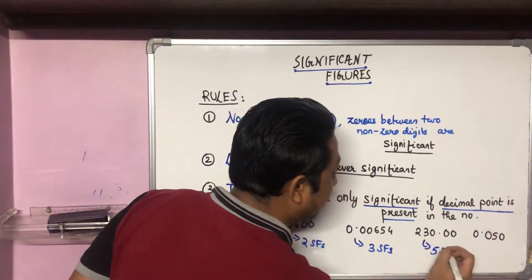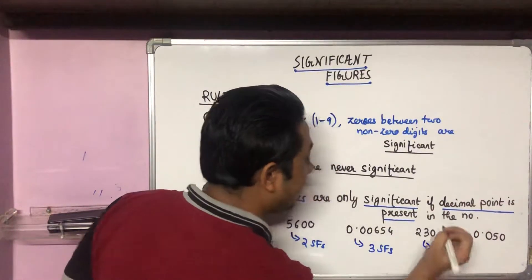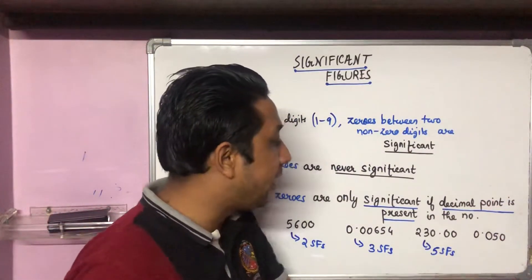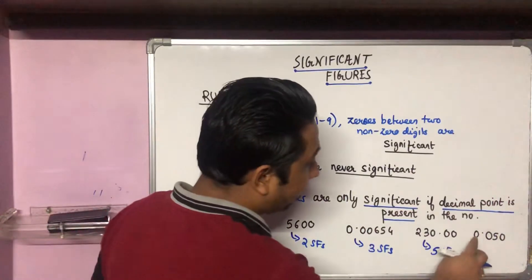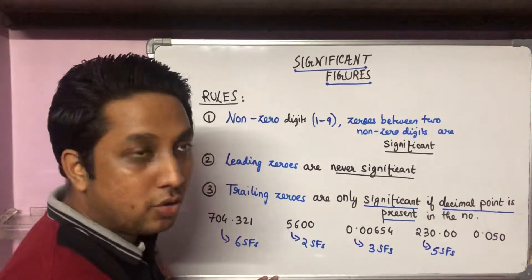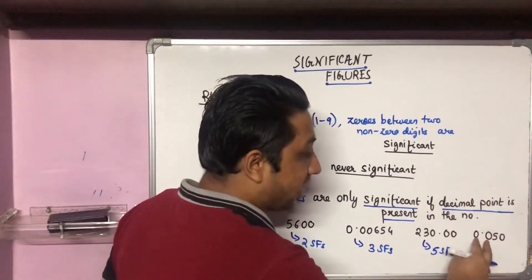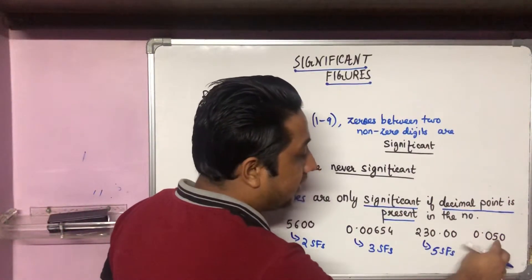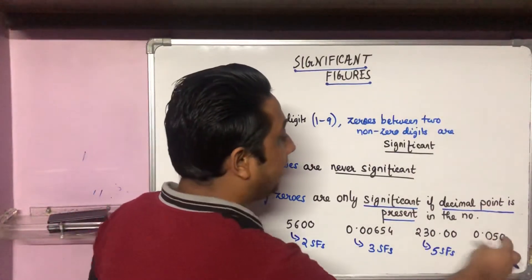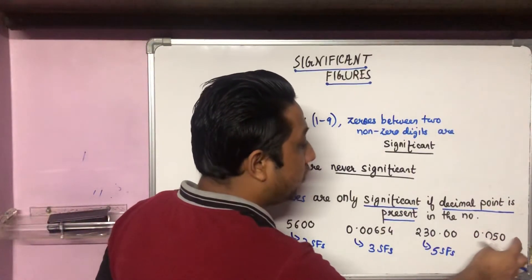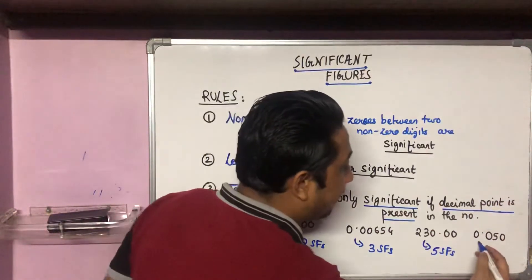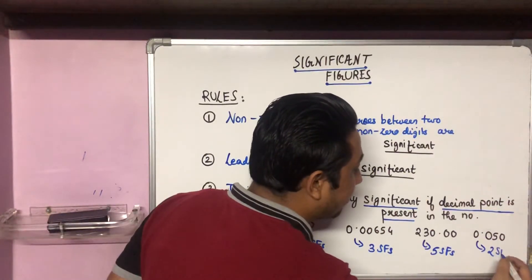Last but not the least, 0.050 — the two leading zeros are not significant. Five, since it is a nonzero digit, will be regarded as significant. The trailing zero at the last would also be regarded as significant because there is a decimal point in the number. So we have two significant figures.